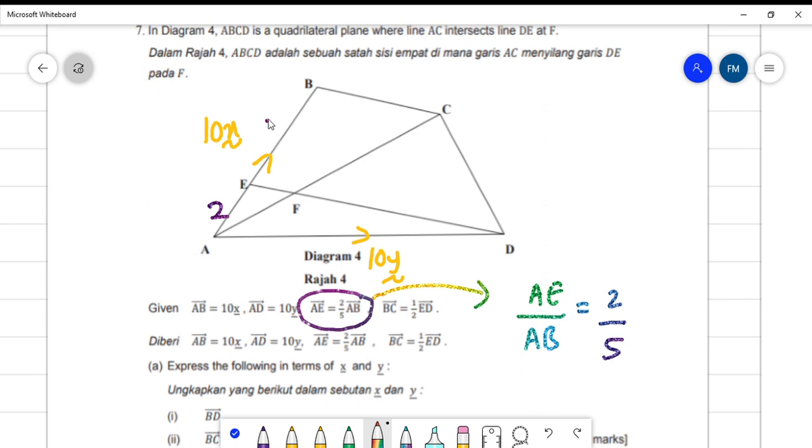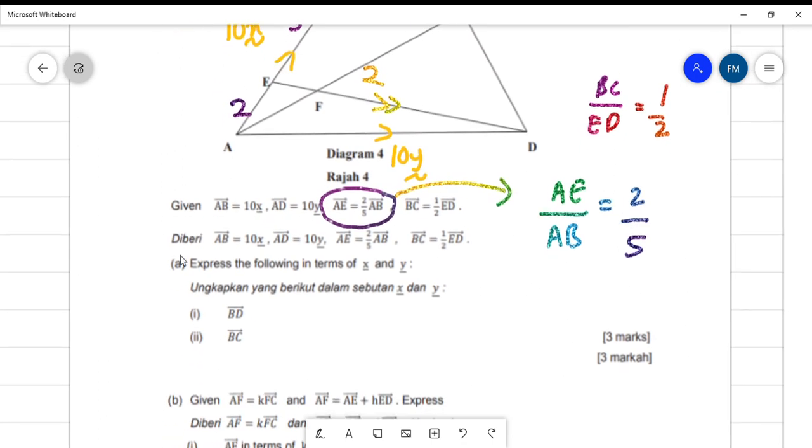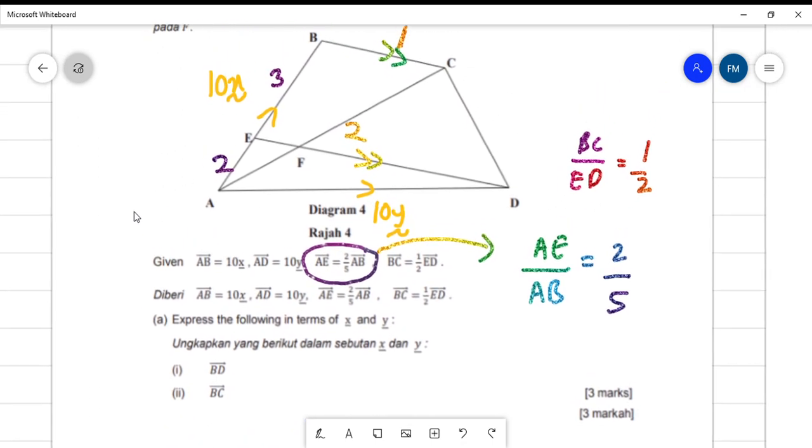Same goes to BC, so BC over ED is 1 over 2. So BC is 1 part, ED is 2 parts. So meaning that this is parallel because we can put it in terms of ratio. This is parallel vector—that is very important to notice that BC and ED is a parallel vector.